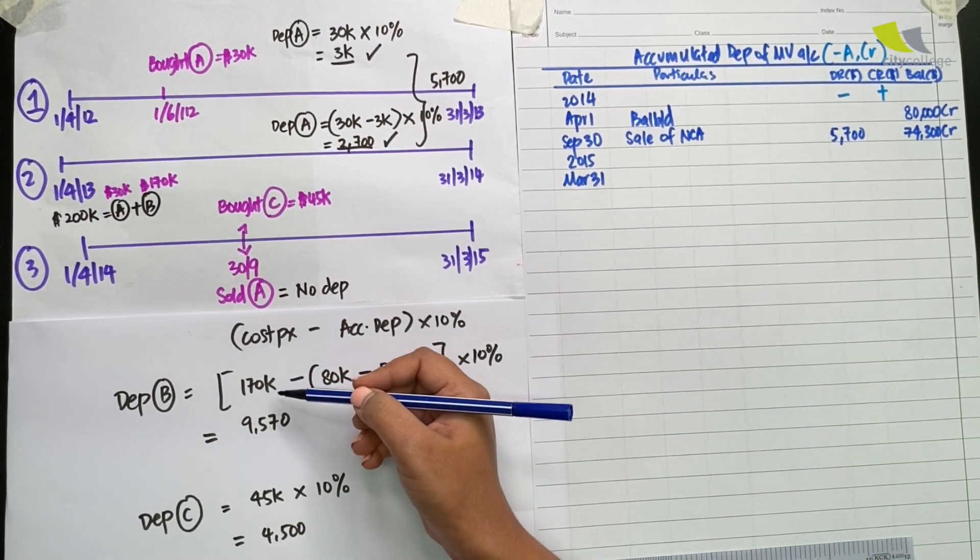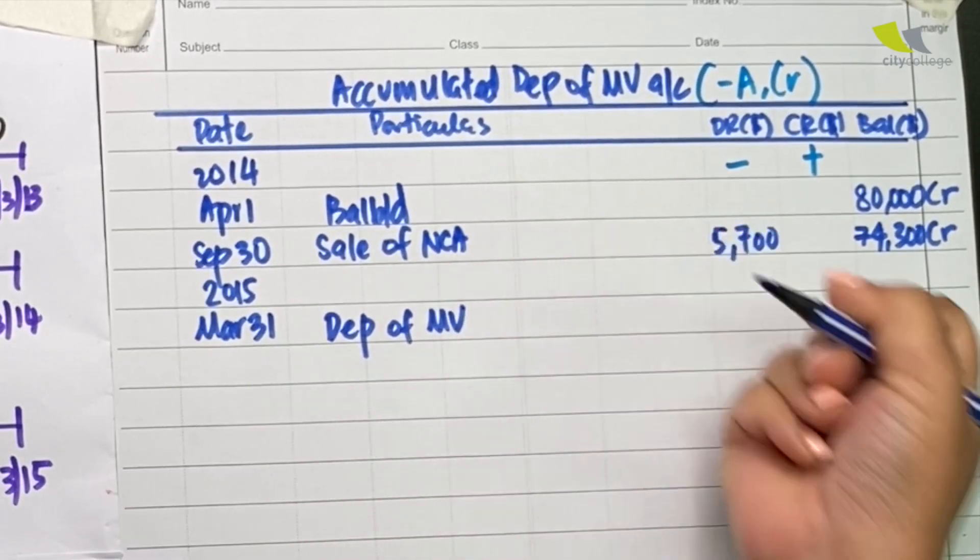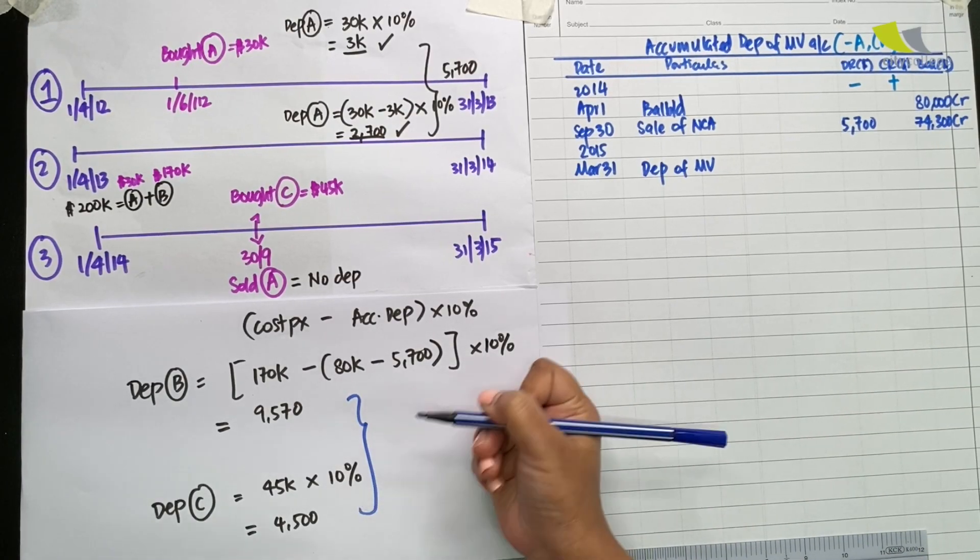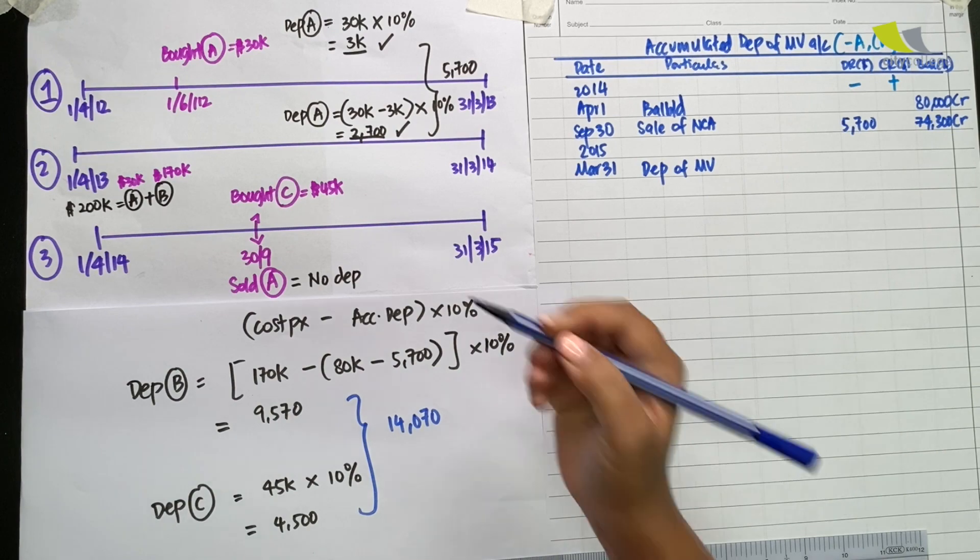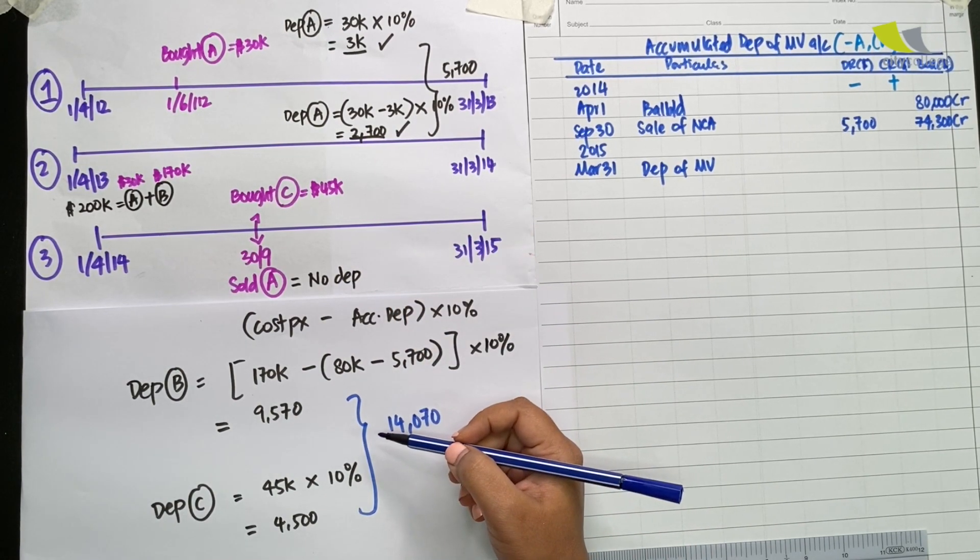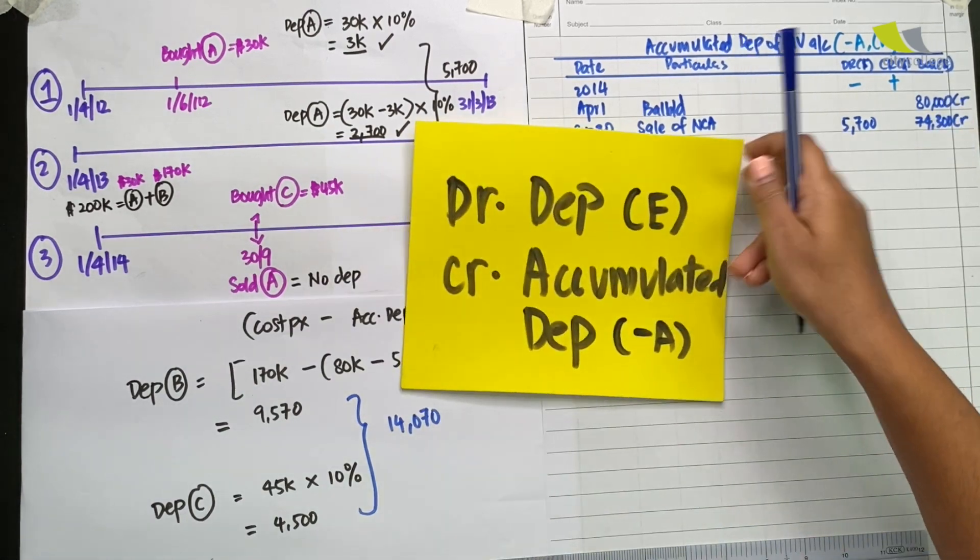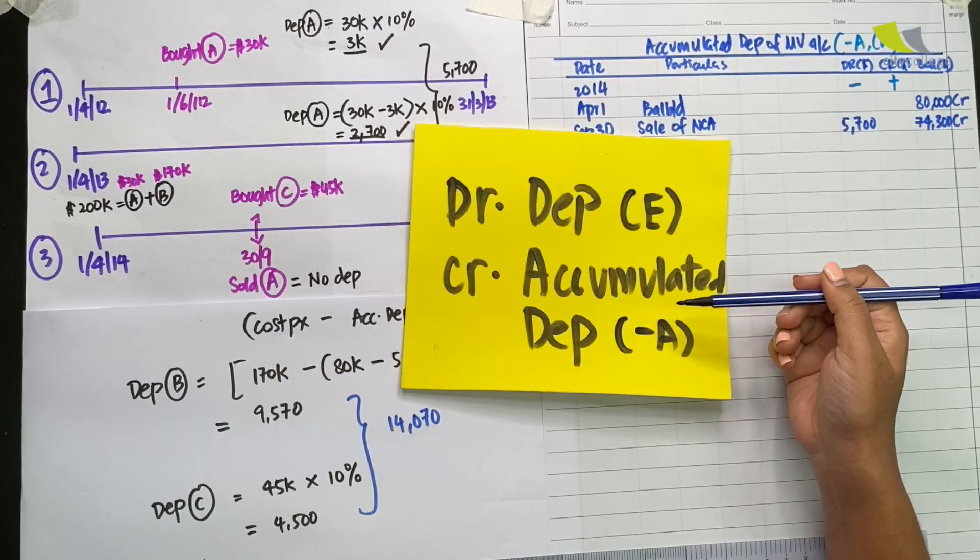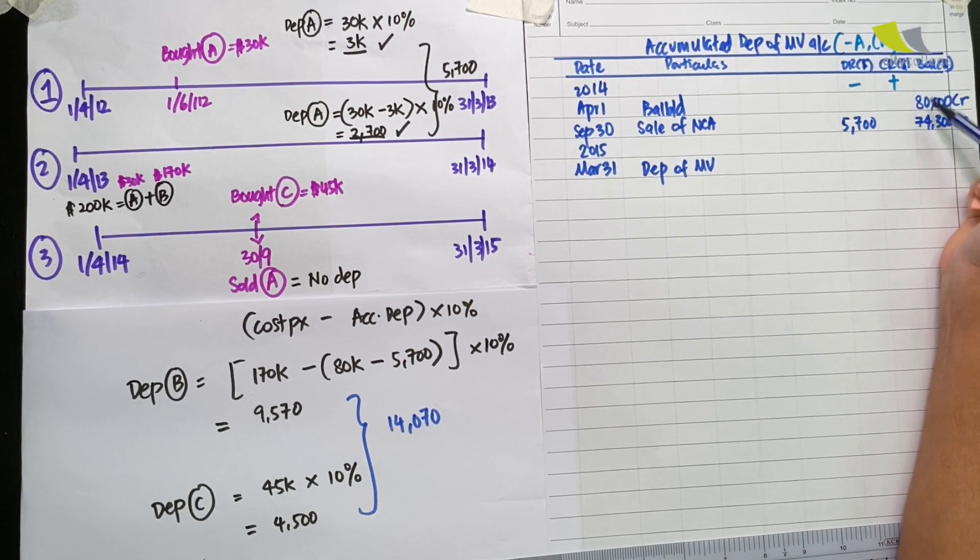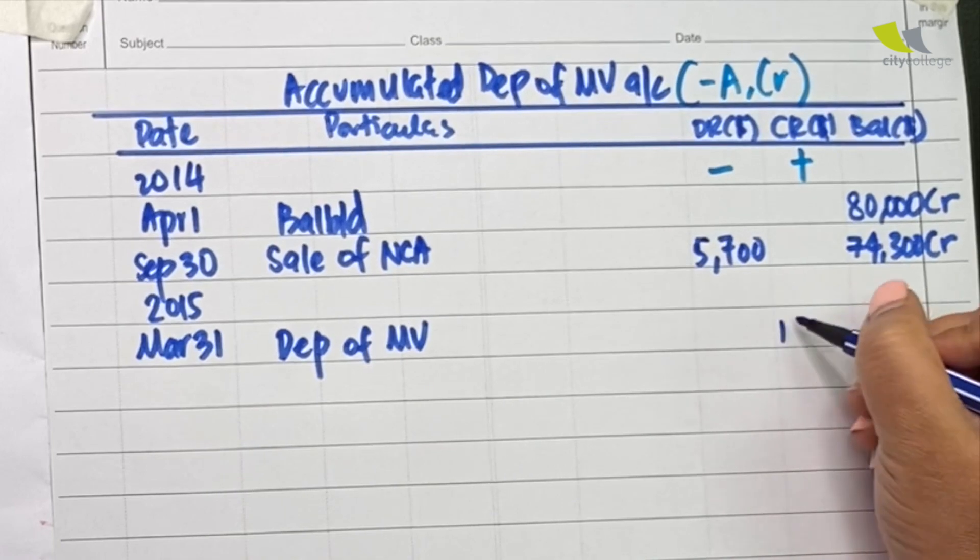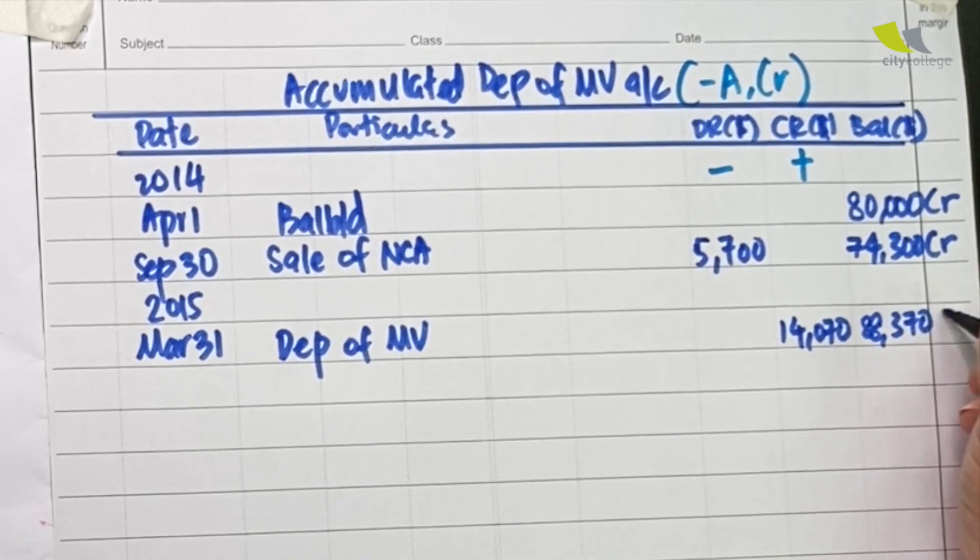How do we record the depreciation for B and C in the question? We simply write depreciation of motor vehicles. Let's add 9,570 and 4,500. That should give us 14,070. We've discussed A has no depreciation, all we need to record now is the depreciation for B and C. Remember the double entry: debit depreciation and credit accumulated depreciation. This 14,070 is going to appear on the credit column of the accumulated depreciation. The new balance will now be 88,370 credit.